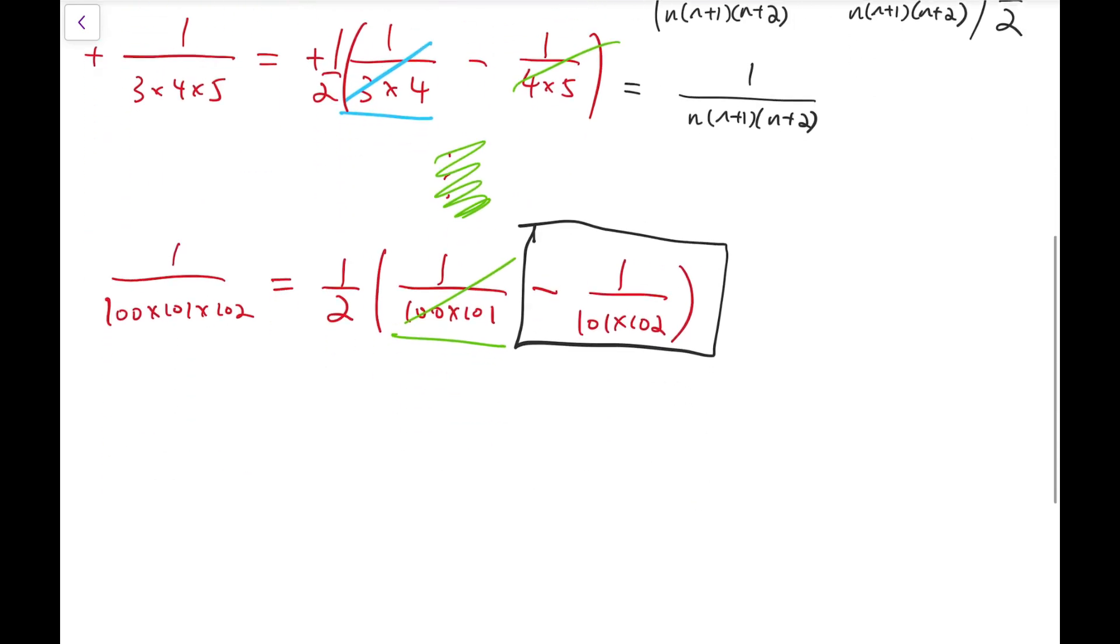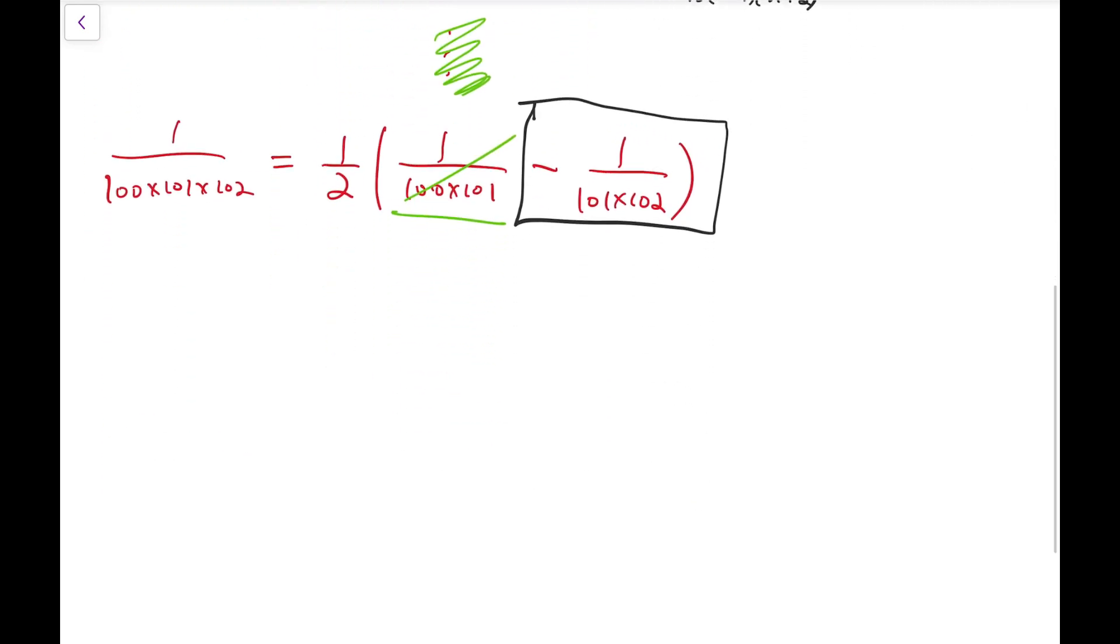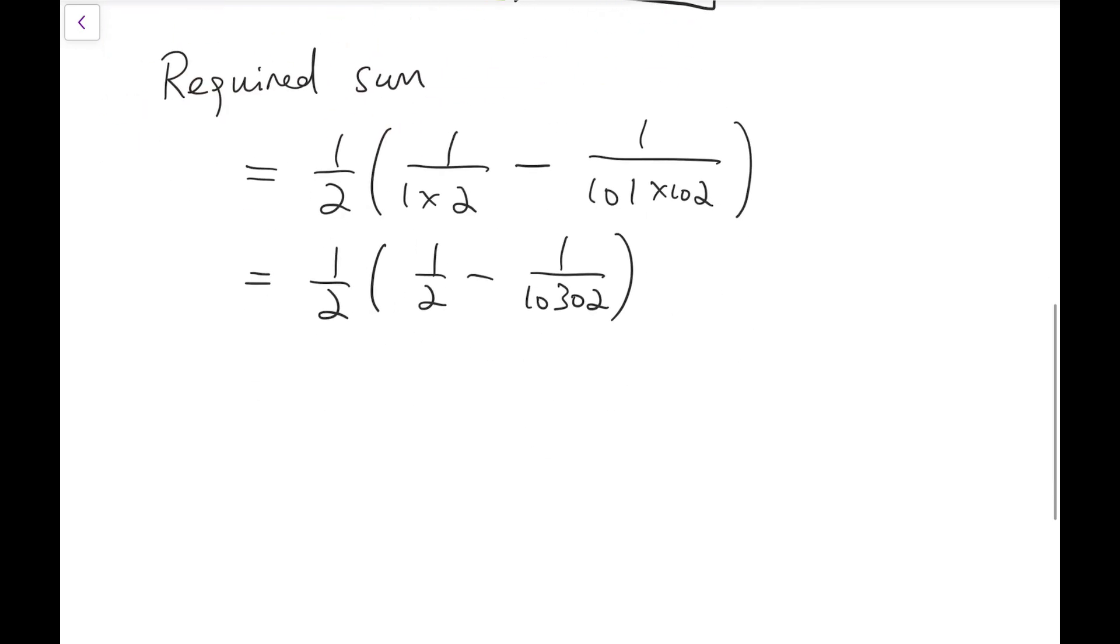So our required sum in fact is equal to 1 half times (1 over 1 times 2 minus 1 over 101 times 102). Be careful that we need to halve both fractions, so they are placed inside the bracket. So what remains is simply some arithmetic.